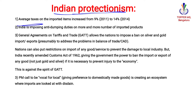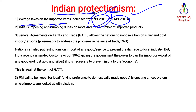Indian protectionism: the average taxes on imported items increased from 9 percent to 14 percent. This is to protect local industries and local exporters. India used this protectionism technique — average taxes on import items increased from 9 percent in 2011 to 14 percent in 2014. India is also imposing anti-dumping duties to protect domestic industry from imported products.